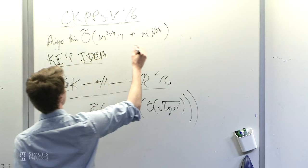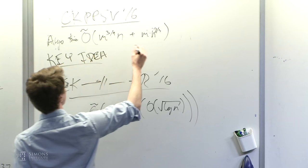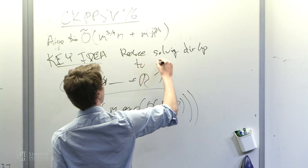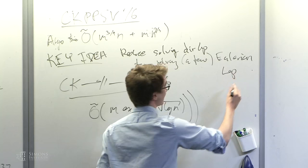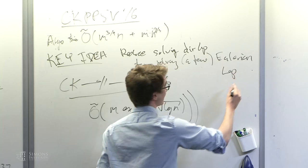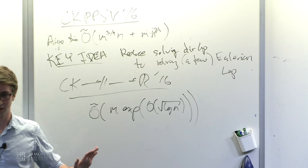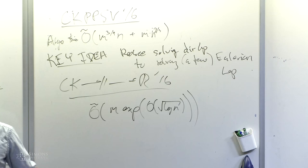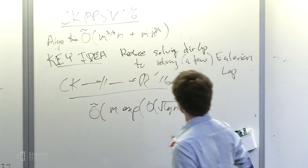Now, the key idea up here was to reduce solving directed Laplacians, so linear equations in these, to solving a few, so we need a few more systems, a few Eulerian Laplacians, which are special kind of directed Laplacians, but easier to work with. So we change it to a different kind of linear system, which I'll tell you much more about. But then we need to solve a few of these. Okay, but these Eulerian Laplacians, we'll get familiar with them, and we'll see that they behave like undirected Laplacians in certain ways, which turn out to be very useful. Okay, so that was the key step here. Reduce it to a much nicer case.